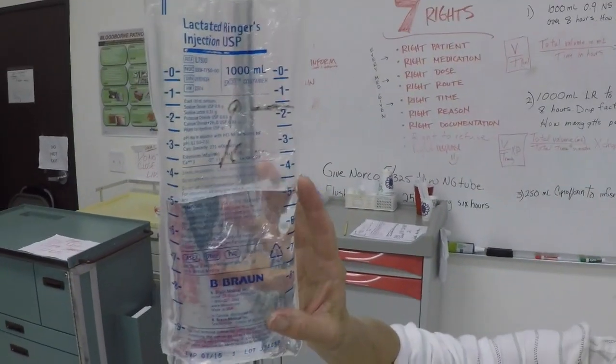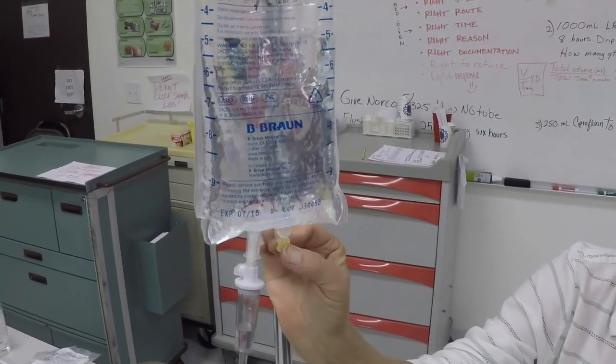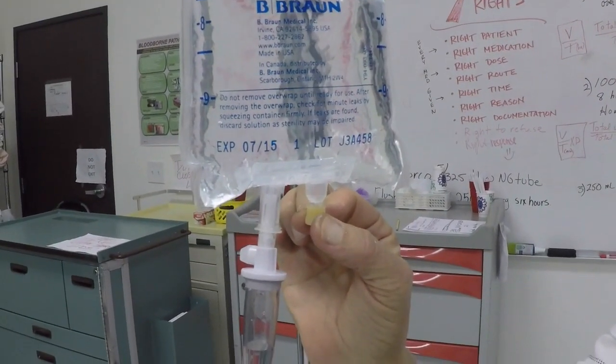So here's an IV bag. We have a liter of fluid, well it's about half empty. We have a liter of fluid. We have an injection port here if we need to add medication to our IV.